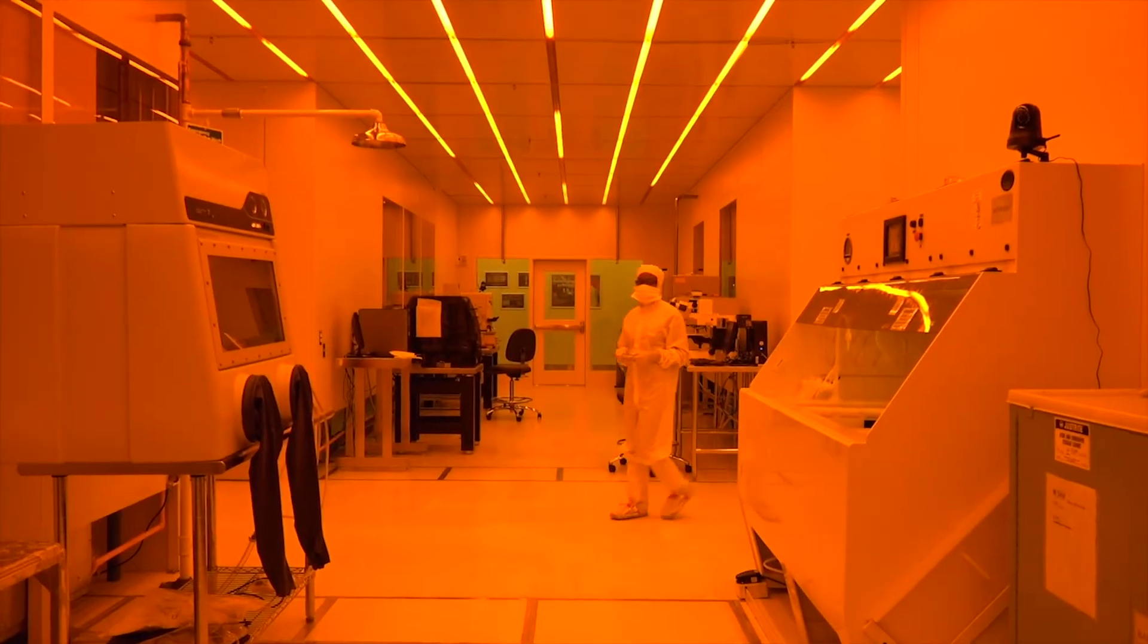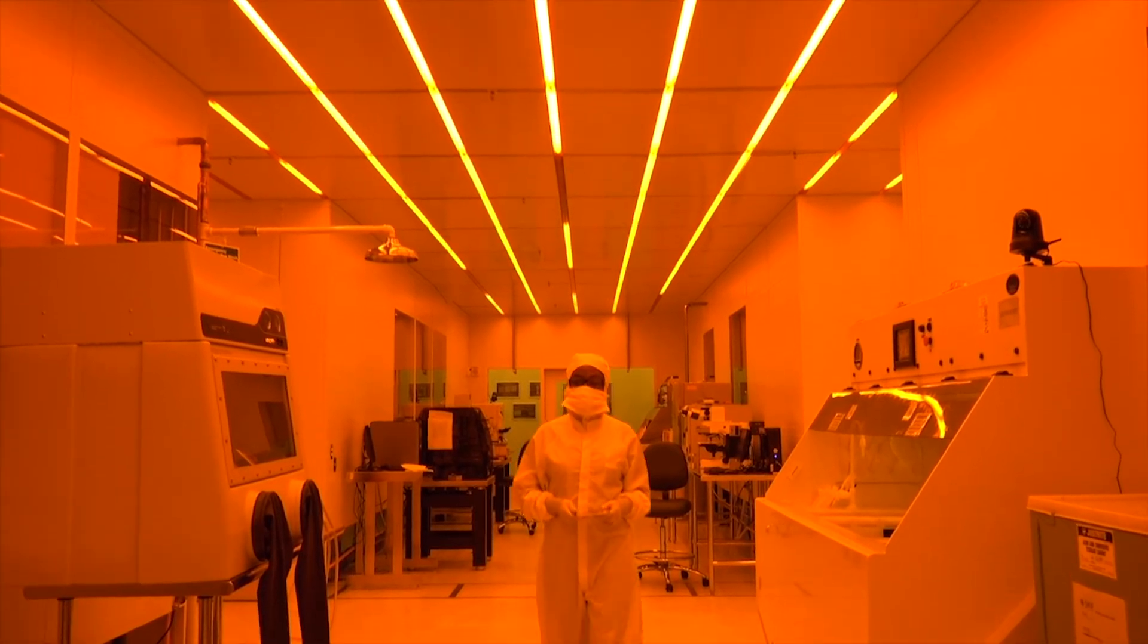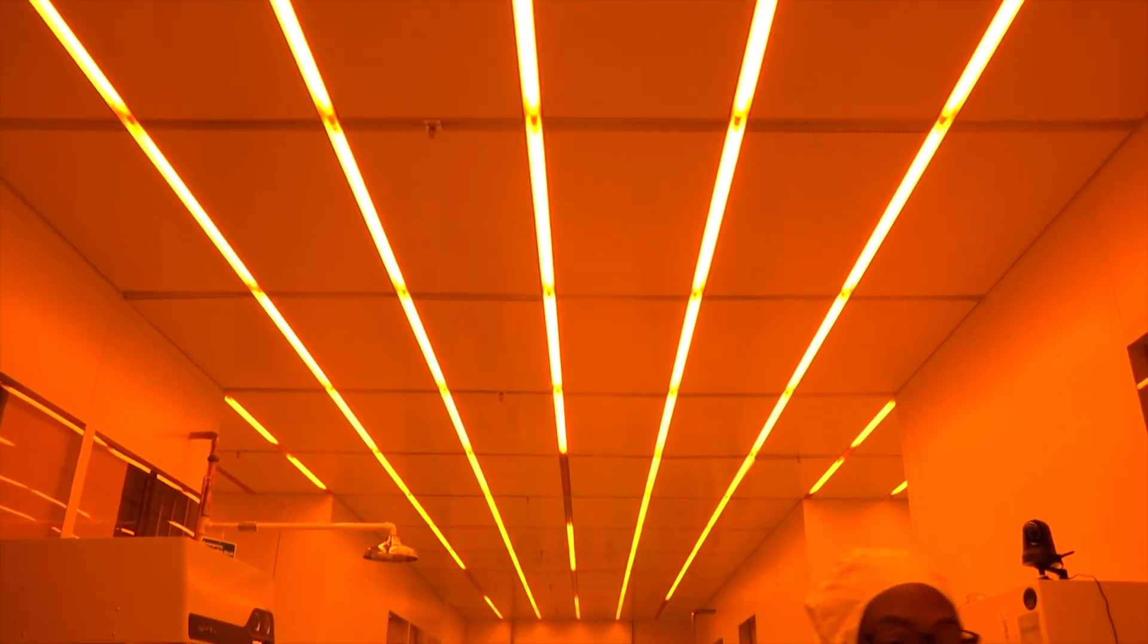Before we begin, you may be wondering about the lighting in this room. Why does the light look amber in color? Well, the polymers used in photolithography are sensitive to shorter wavelength light, that is, blue light and ultraviolet light. These light-sensitive polymers are called photoresists, or simply resists for short. Short wavelength ultraviolet light, also called UV light, is used to expose photoresists during patterning, but we must avoid unwanted exposure from room light. So we use special lights that do not emit shorter wavelength light, and this light appears amber in color. That's why the lighting of this room appears different from typical room lighting.